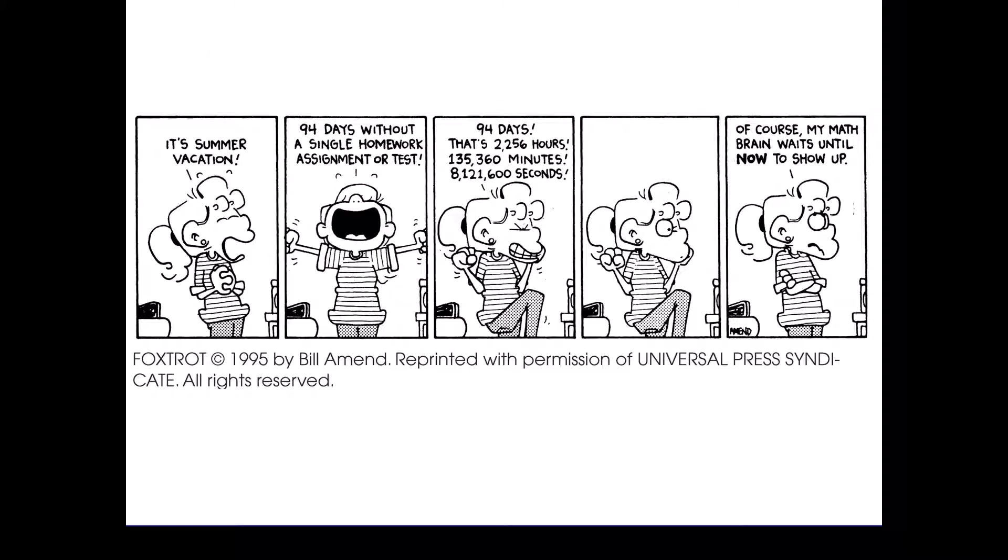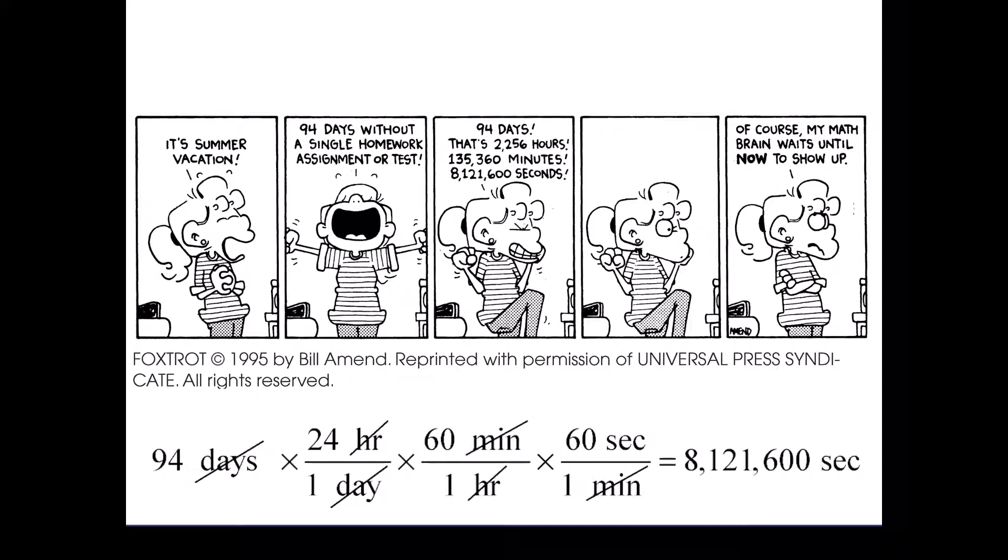This is a great cartoon. She says it's summer vacation, 94 days without a single homework assignment or test. And then all of a sudden she says that's 2,256 hours, all those minutes, over 8 million seconds. And Summer just got there, and of course she's like, oh, now your math brain shows up once it's summer. So how would she have done that 94-day conversion? To get it all the way to seconds, she'd have had to use a bunch of conversion factors.